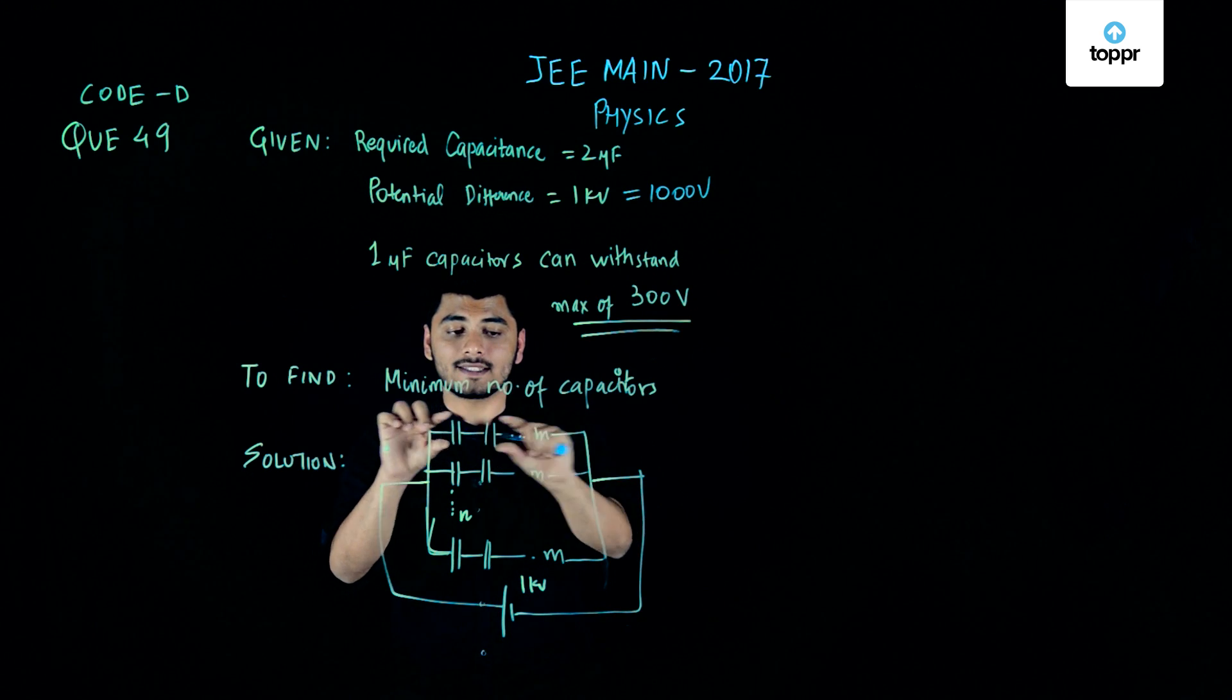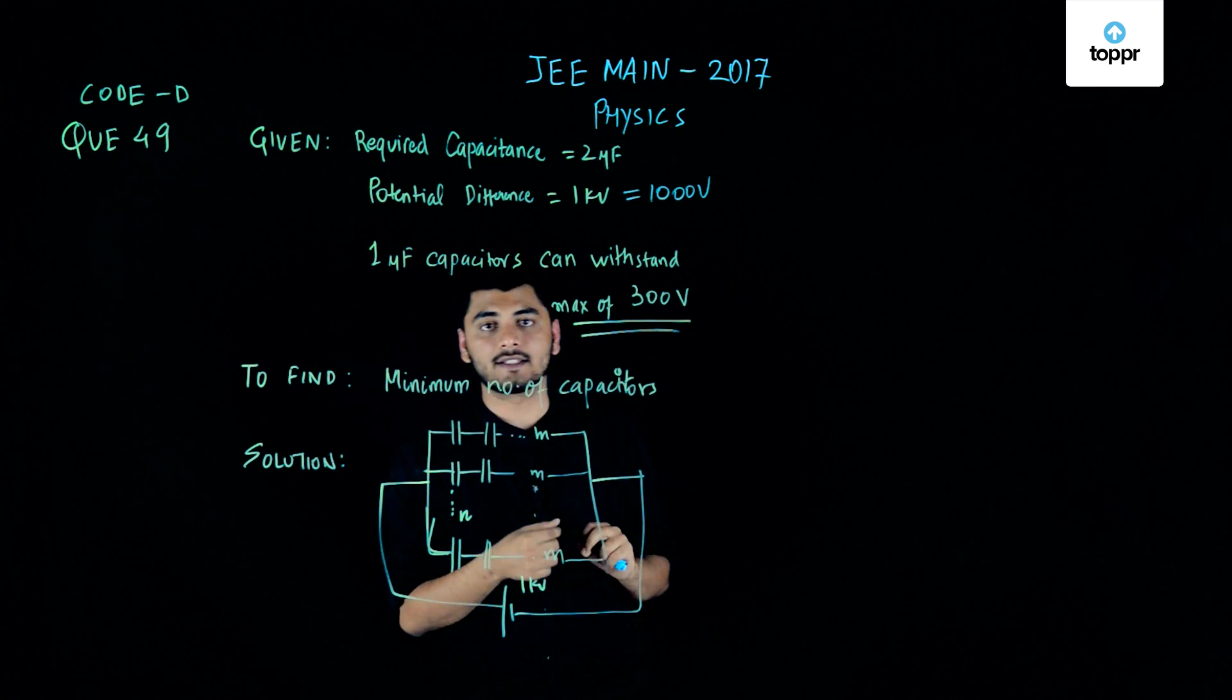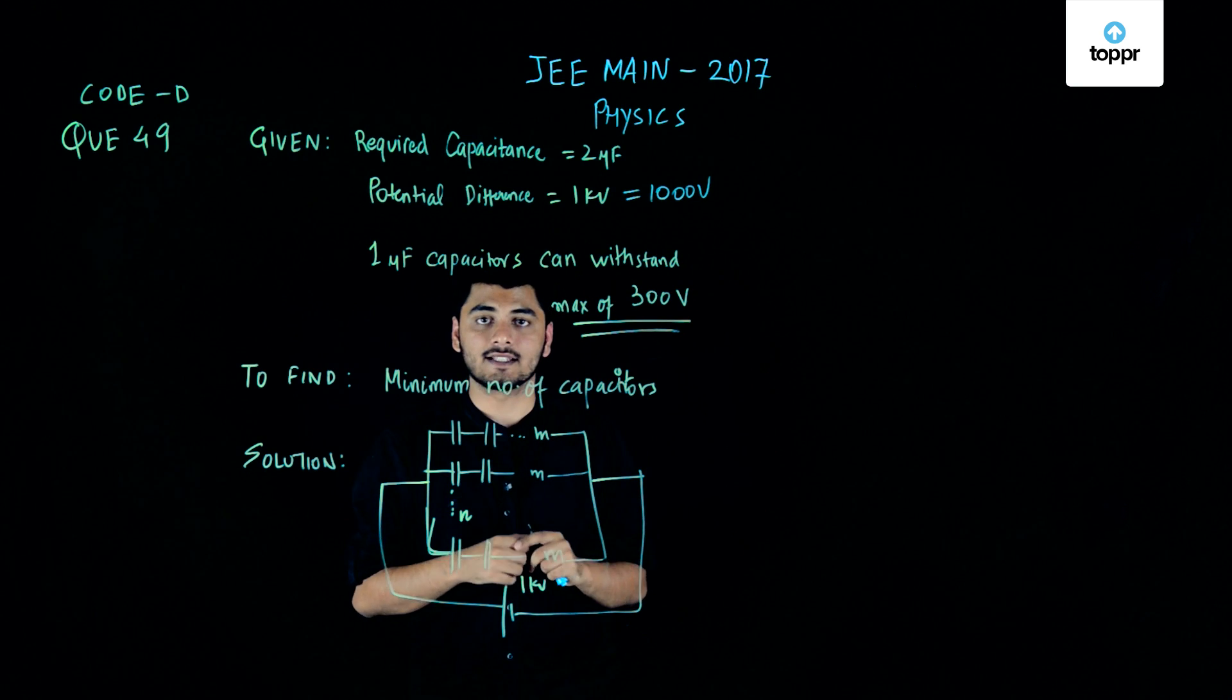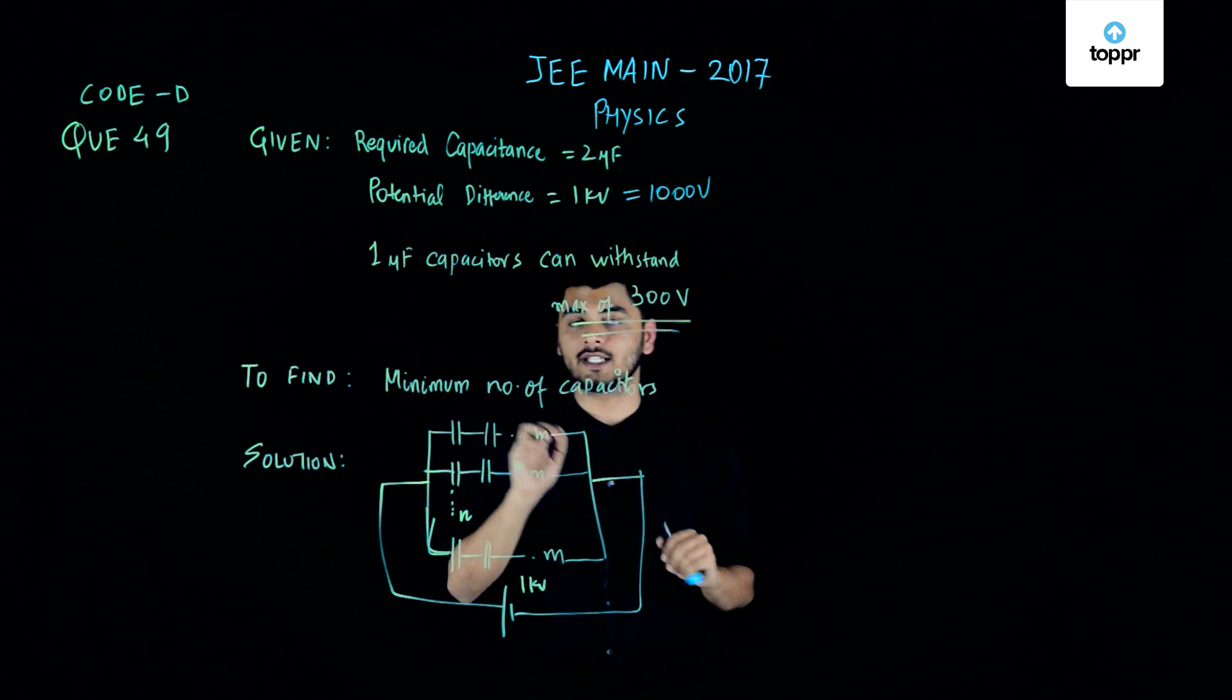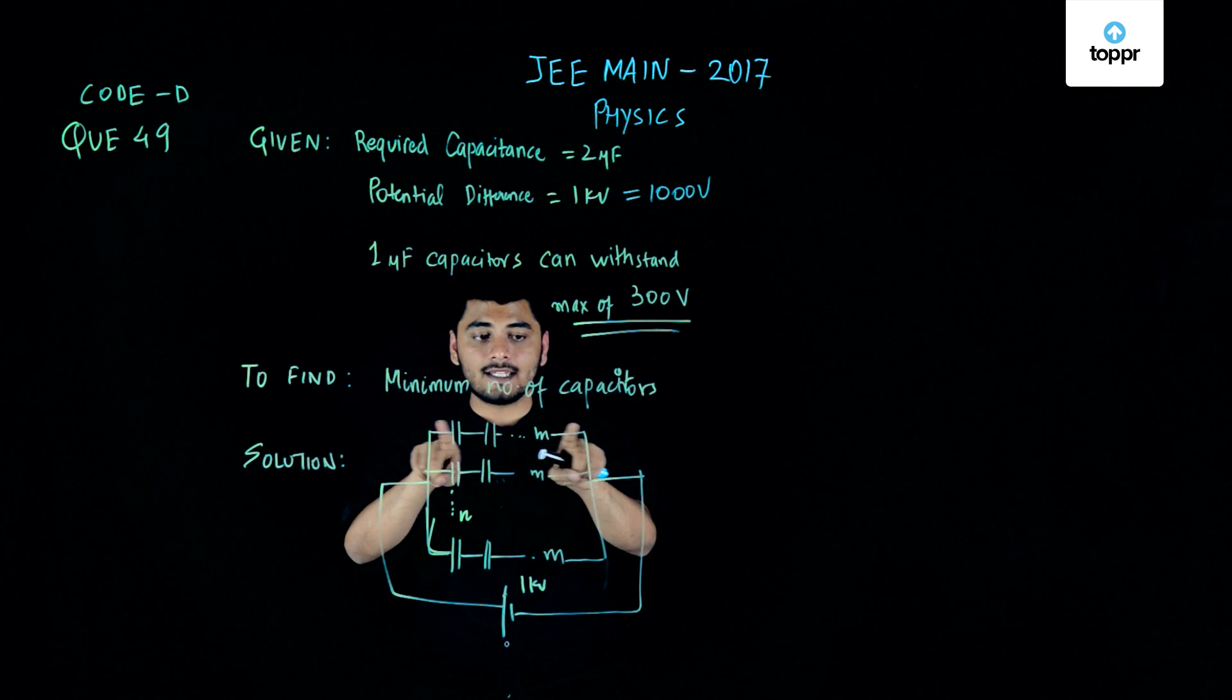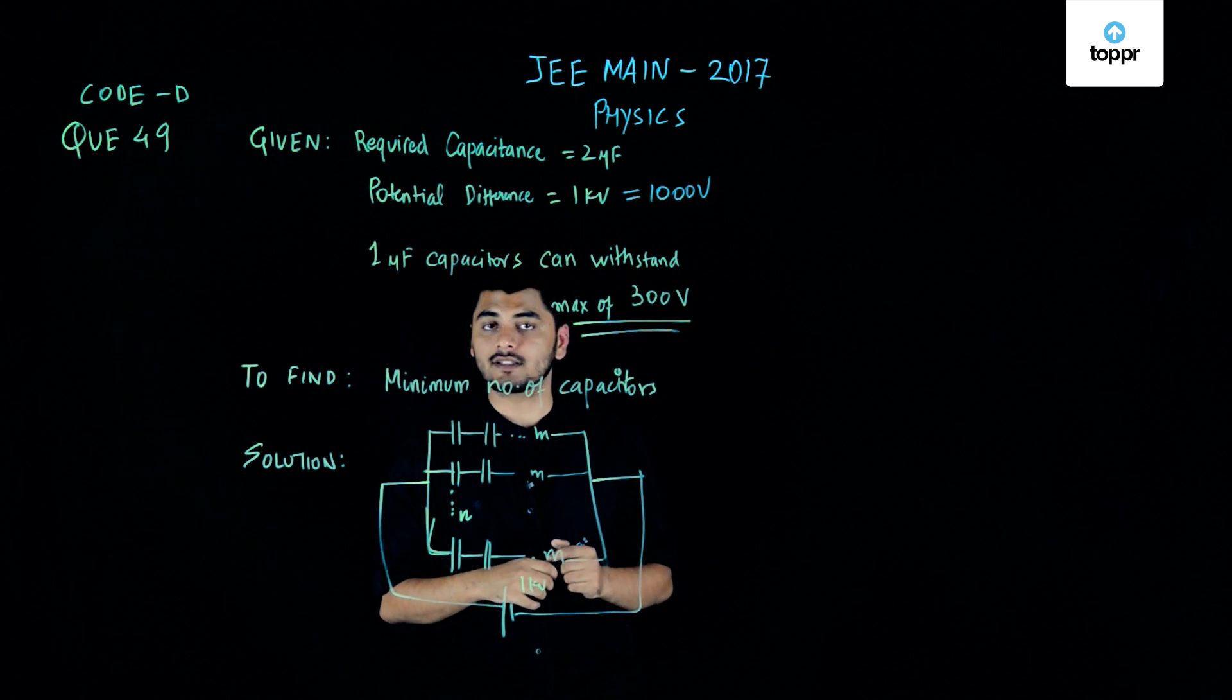Now analyzing one single branch for this purpose, I know that one of my capacitors, that is of 1 microfarad capacitance, can only withstand a potential difference of maximum up to 300 volts. So this entire thing, the entire row must withstand a capacitance of 1000 volts.